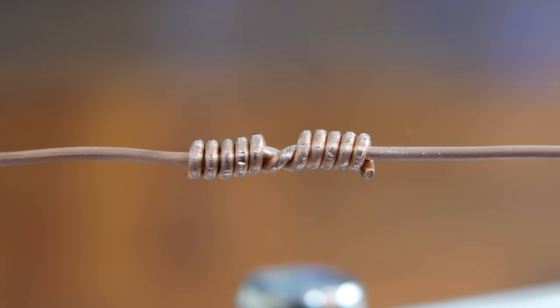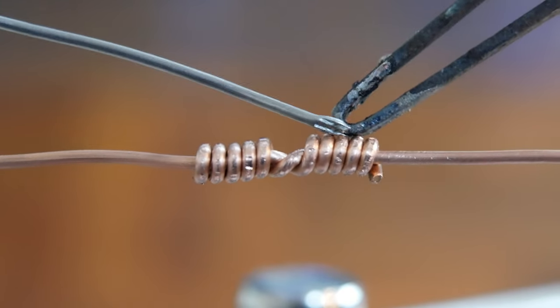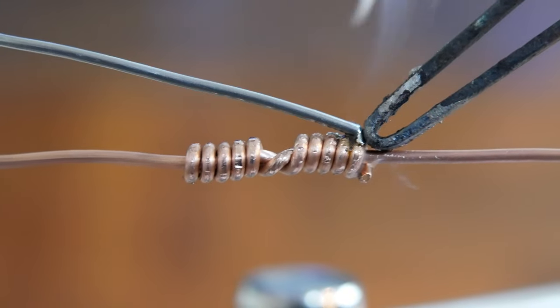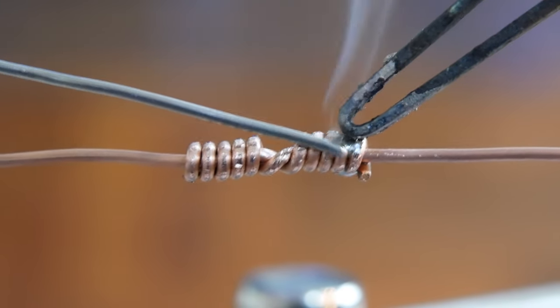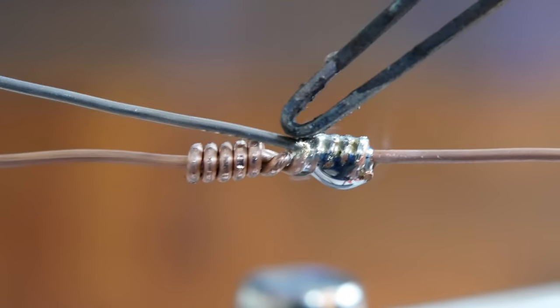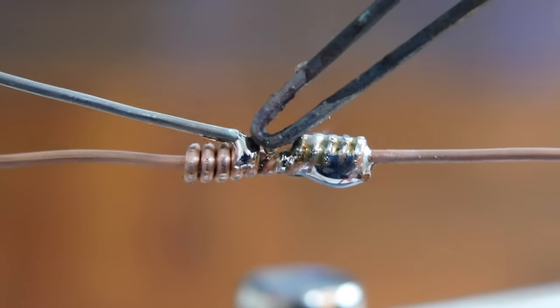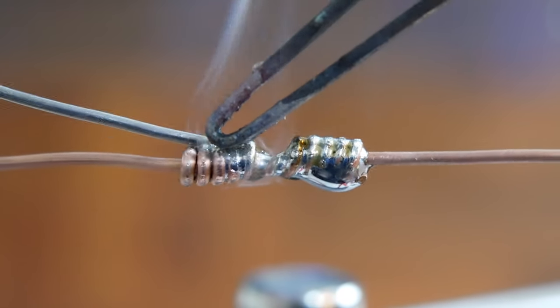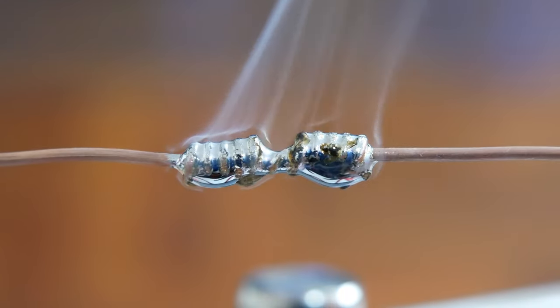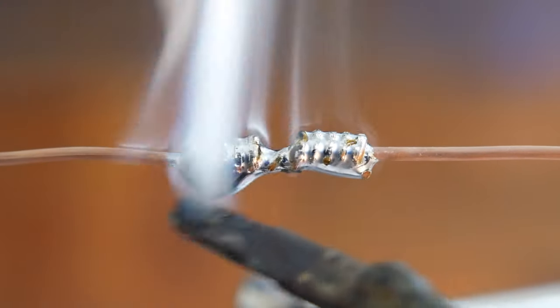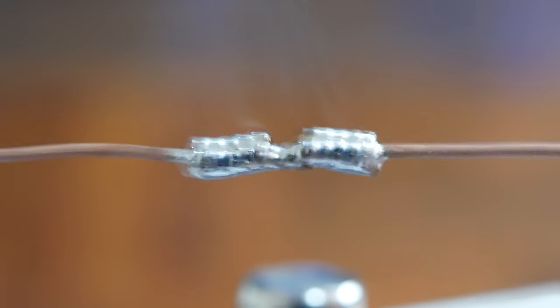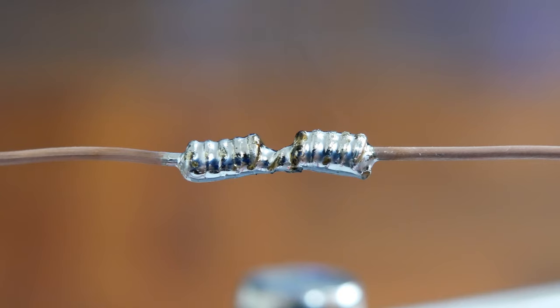So this joint takes a lot of heat and a lot of solder. Since there's no insulation on this wire, it doesn't really matter where we begin. We just want to make sure that we carefully get solder all the way through the joint. And a little too much solder. Okay.